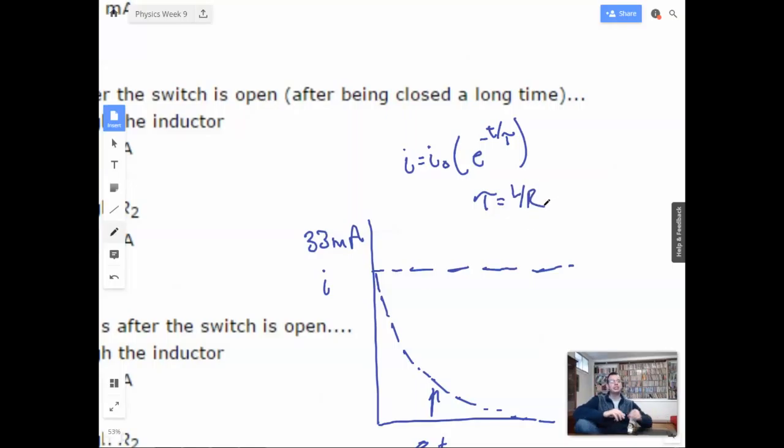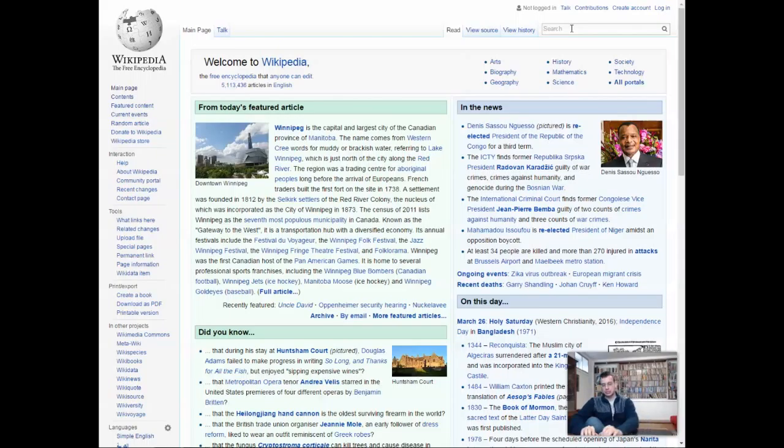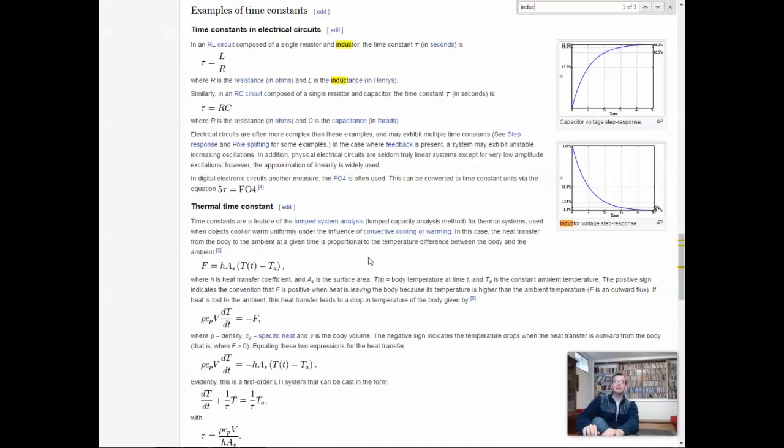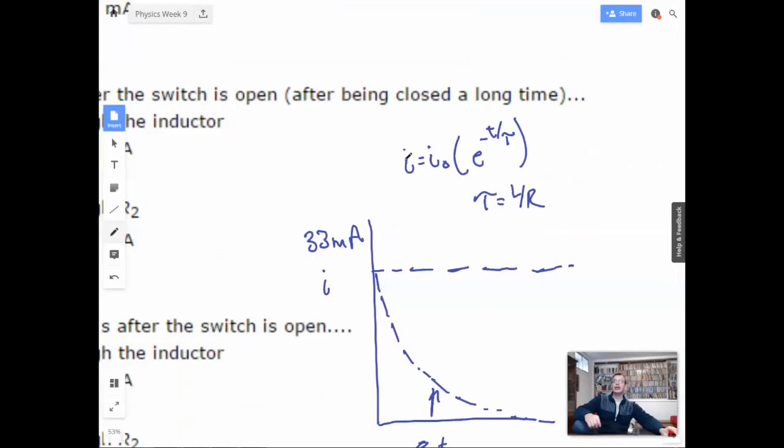Tau equals RC or L over R. Time constant. My memory is terrible. I'm originally a math guy, so I can only remember like four formulas, and I used that the whole semester. So this whole idea of memorizing more than four formulas, totally foreign to me. Tau equals L over R, got it.